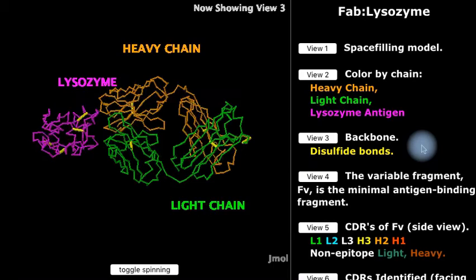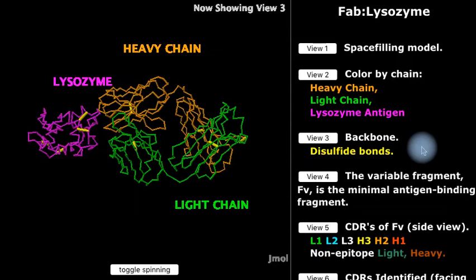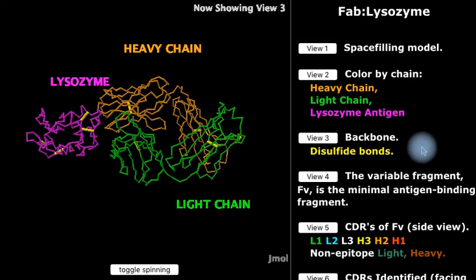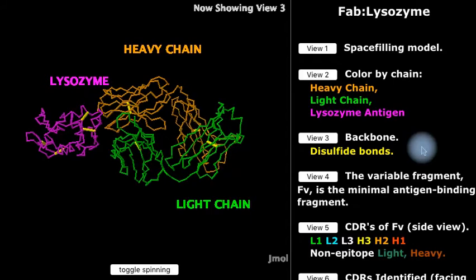There are two immunoglobulin domains in the heavy chain fragment seen here, and two in the light chain. So a total of four immunoglobulin domains in the FAB fragment. There is one disulfide bond in each immunoglobulin domain, so a total of four disulfide bonds in the FAB. And lysozyme itself happens to also have four disulfide bonds.